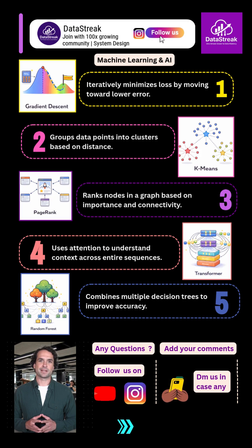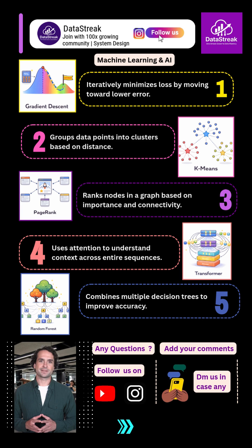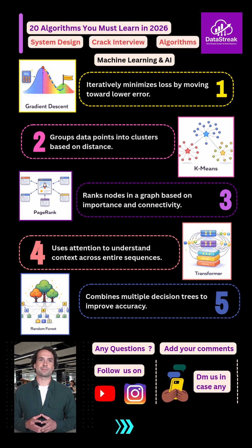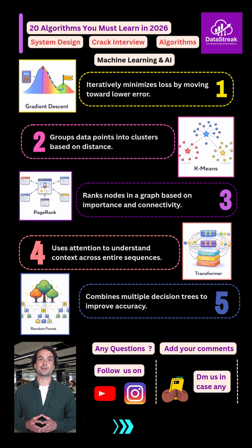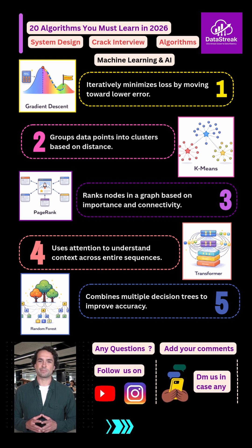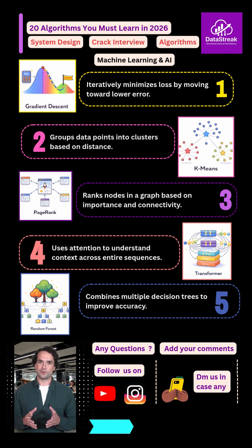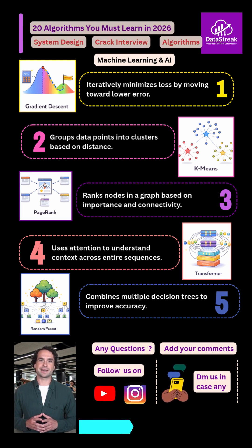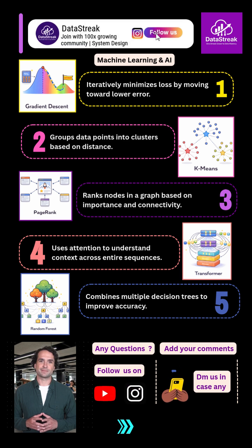Now, machine learning fundamentals. Gradient descent trains models. K-means finds hidden patterns. Random forests improve accuracy with ensembles. PageRank ranks importance in graphs. And transformers power modern Gen AI and LLMs.